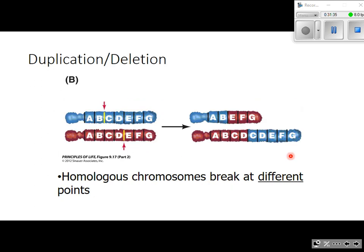The second category is called a duplication-deletion. During crossing over, the two non-sister chromatids should break at exactly the same point, but sometimes they break at asymmetrical points. When they swap DNA, one chromosome gets extra copies of some genes — that's a duplication — and the other chromosome is completely missing those genes — that's a deletion. This is the result of homologous chromosomes breaking at different points and then exchanging DNA with each other.